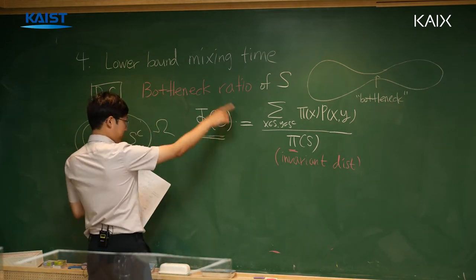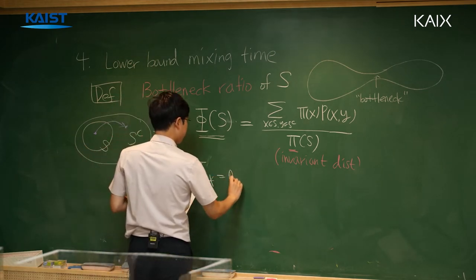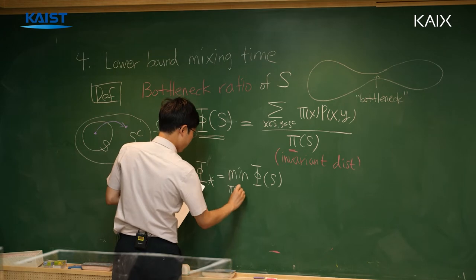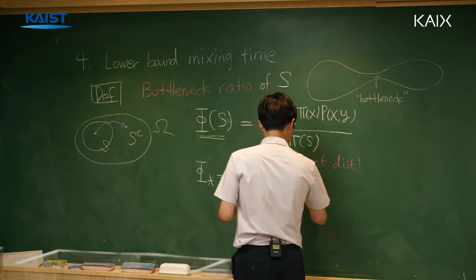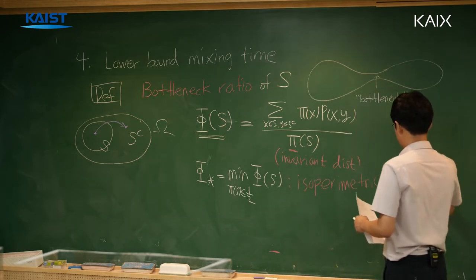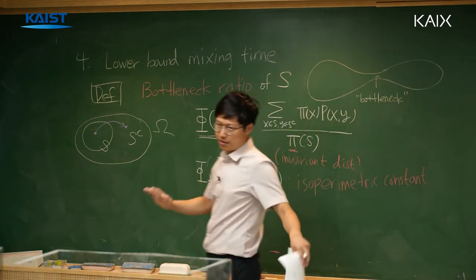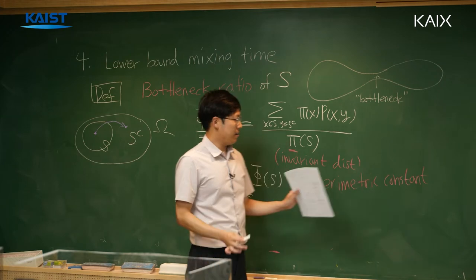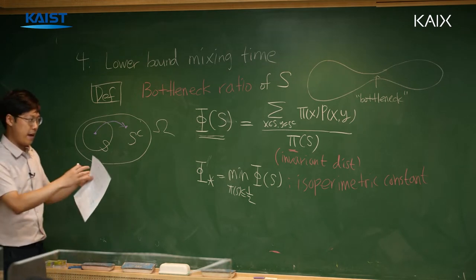If we take the minimum of this value among all sets whose mass is less than one-half, this is called the isoperimetric constant phi*. This is the Markov chain analog of the isoperimetric constant in differential geometry; they have very similar meaning. The reason we call this the isoperimetric constant is that it connects geometric shape to mixing behavior.